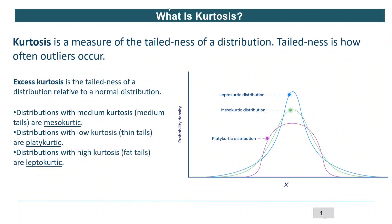Dear viewers, welcome to another video on descriptive statistics. In one of my previous videos on graphical summary, I was explaining about how we decide whether a given distribution is approximately following a normal distribution or not. In that video, I was explaining about the p-value, which is the probability value used in hypothesis testing — specifically the Anderson-Darling test, which has a null and alternate hypothesis about whether the given distribution approximately follows normal distribution.